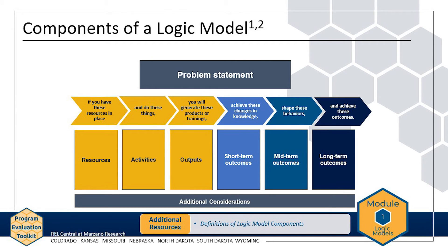In a way, completing a logic model involves answering a series of if-then questions. For example, if you have this resource, then you can do this activity. If you do this activity, then you will generate this output, perhaps a product or training. And if you generate this product or training, then the program will result in these expected outcomes. The resource Definitions of Logic Model Components, available on the resource page of the website, provides a more complete definition of each logic model component. You can download this document for reference as you move through the rest of Module 1.